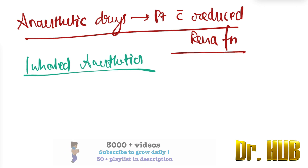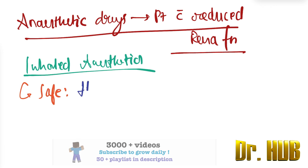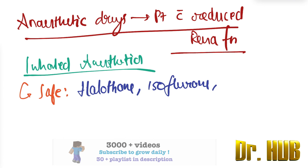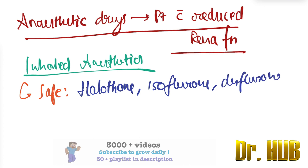Under the inhaled anesthetics, we are going to look at the safe category. The safe category includes halothane, isoflurane, and desflurane.